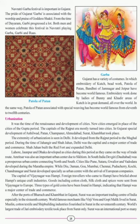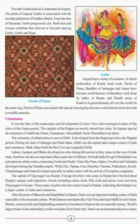Urbanization: The Delhi Sultanate and Mughal rule were a time of urban revival and development. New cities emerged in place of Gupta period cities. Capitals of the Rajput era mostly turned into cities. In Gujarat, cities like Anilwar, Patan, Champanir, Ahmedabad, Surat and Kambhat developed. The best example of urbanization is Delhi, which developed continuously from the Rajput to the Mughal period. During the time of Jahangir and Shah Jahan, Delhi was the capital and a major center of trade and commerce. Shah Jahan built the Red Fort and expanded Delhi.